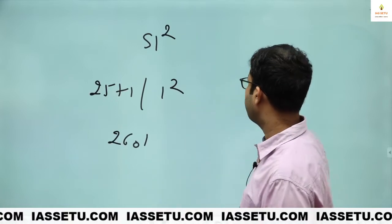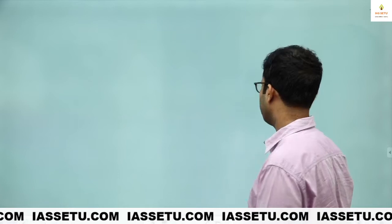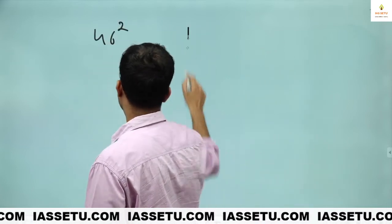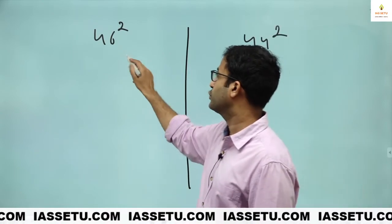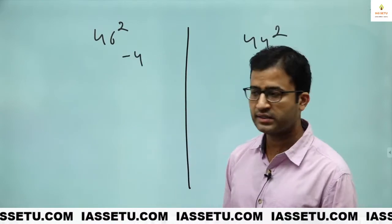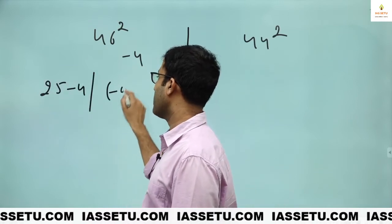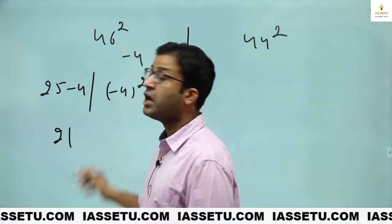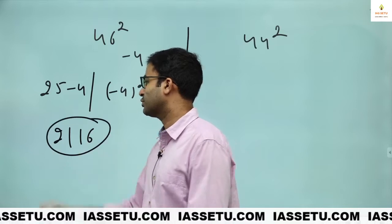Now we will see number between 25 and 50. 25 and 50. We will see numbers below. Like 46 square. 44 square. Here we will see minus. So this is minus 4. The rest is the same. 25 minus 4. This is minus 4 square. So here this is 21. Minus 4 square is also plus 16. So 16. So this is 2116.